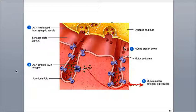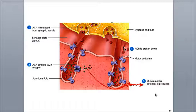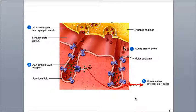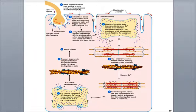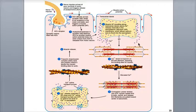This change in charge triggers the muscle action potential, which is then propagated across the entire muscle fiber in both directions, traveling along the sarcolemma and down the T tubules. The action potential then triggers the release of calcium ions from the sarcoplasmic reticulum into the sarcoplasm of the muscle fiber, and then the muscle contraction cycle begins. This process repeats if another nerve impulse releases more acetylcholine.